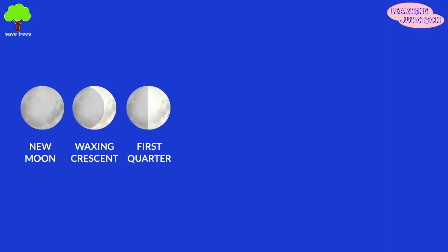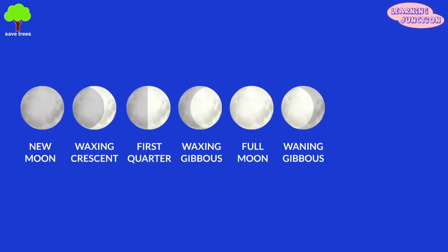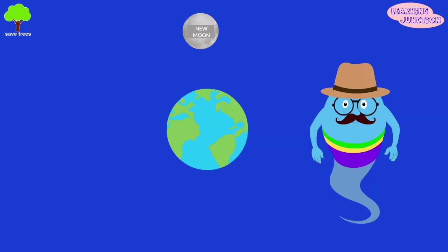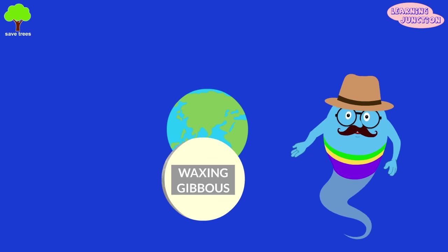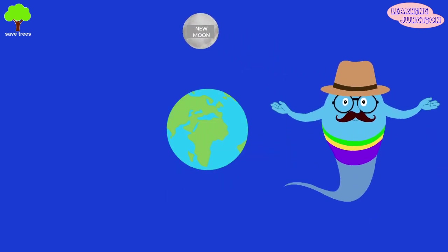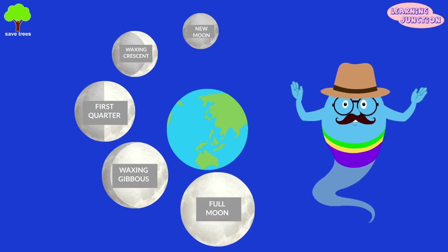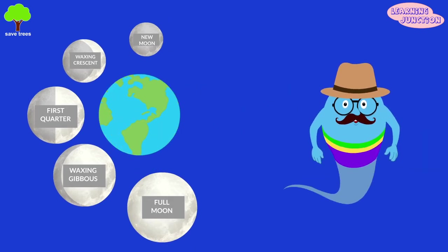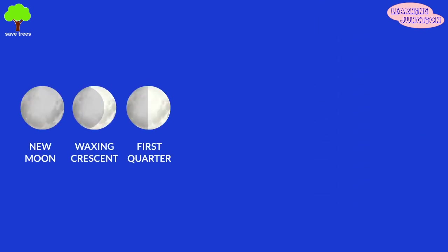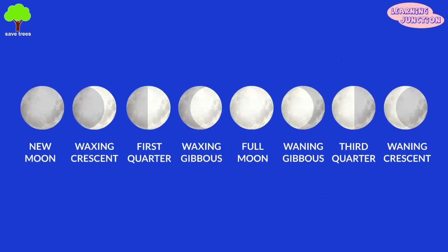These shapes or phases are named after how much of the moon we can see, and whether the amount being seen is decreasing or increasing per day. The phases of the moon work in a cycle that starts with the new moon. A complete cycle from new moon to full moon takes 29 and a half days — this is known as the lunar month. There are a total of eight phases of the moon. Let's study them one by one.